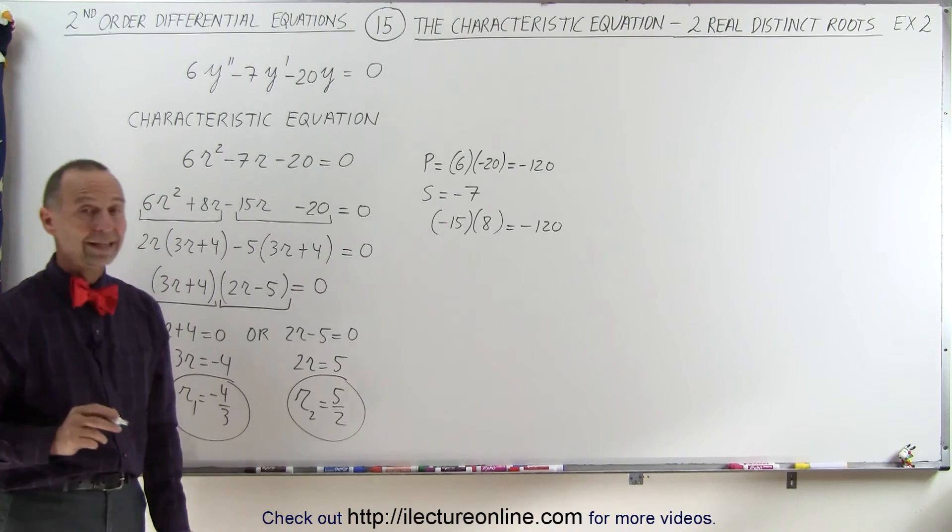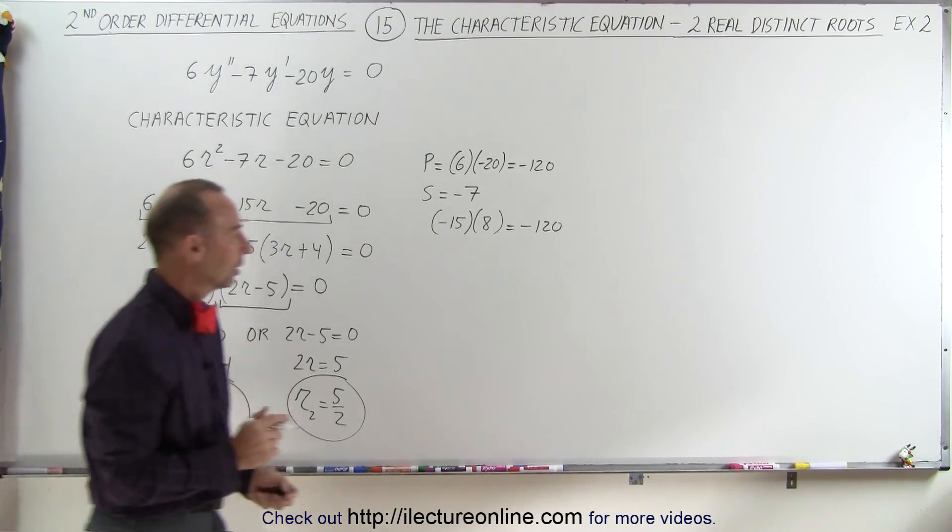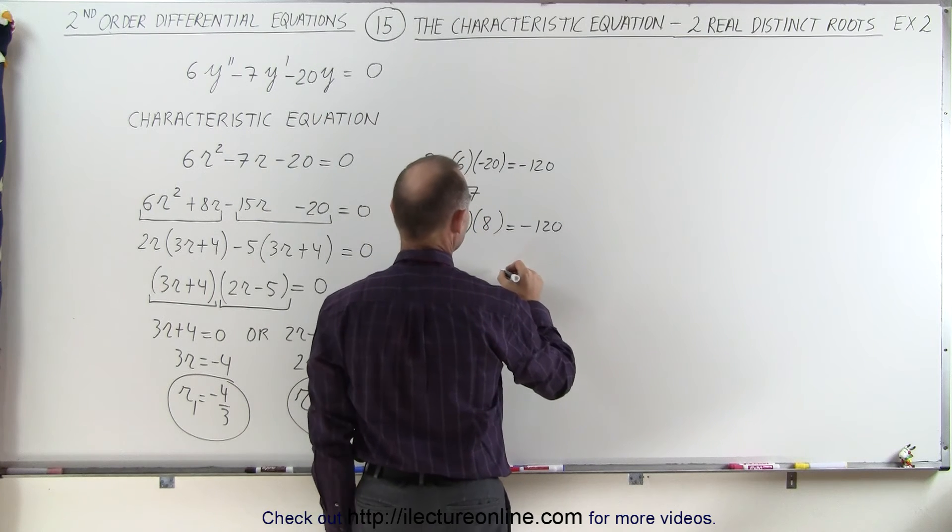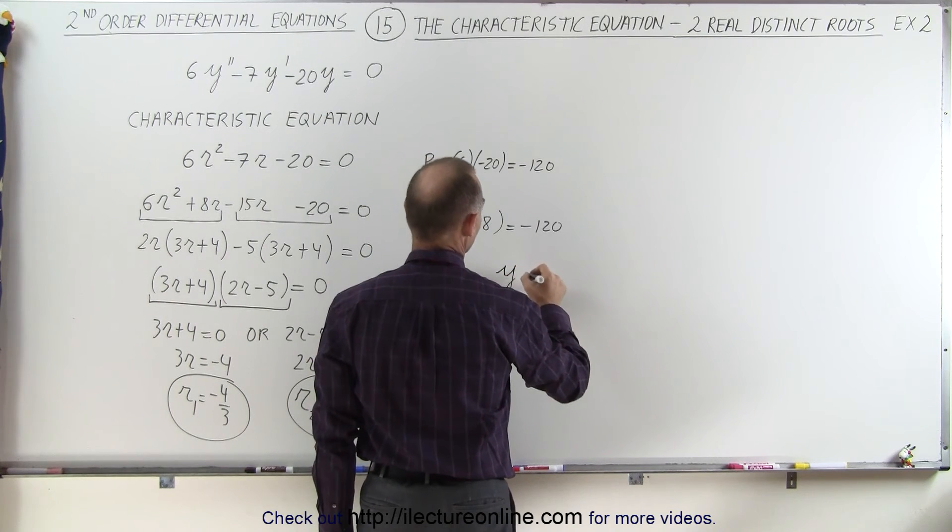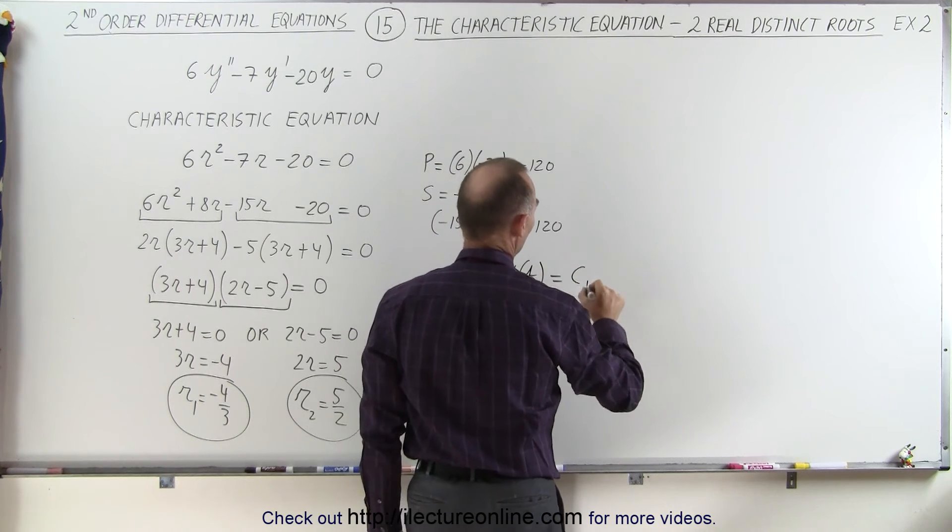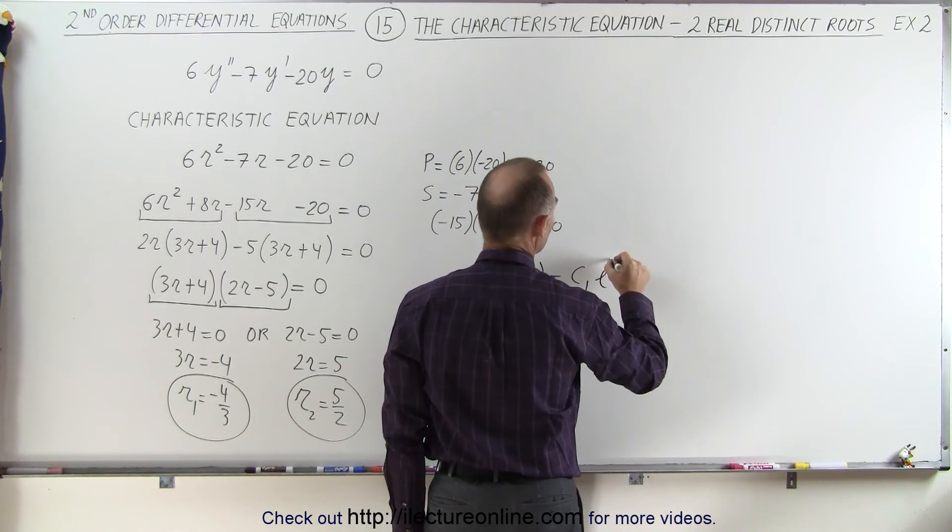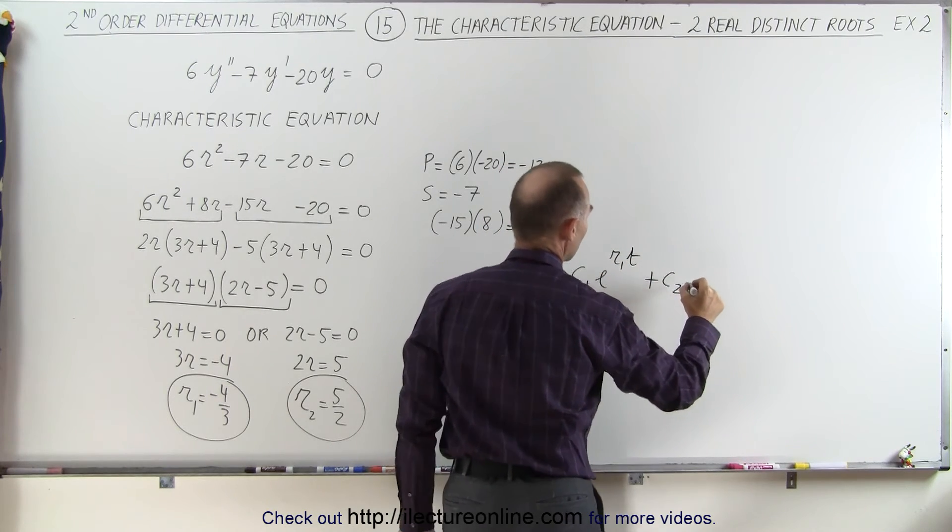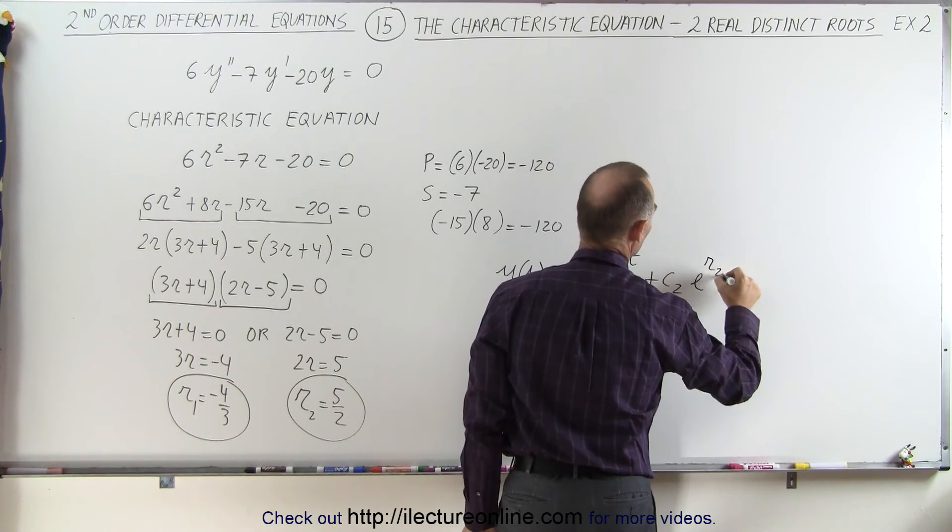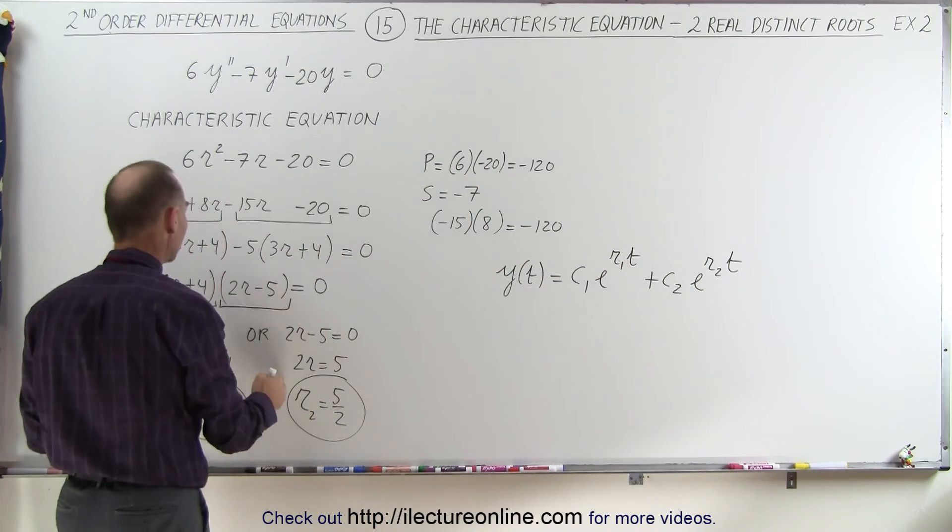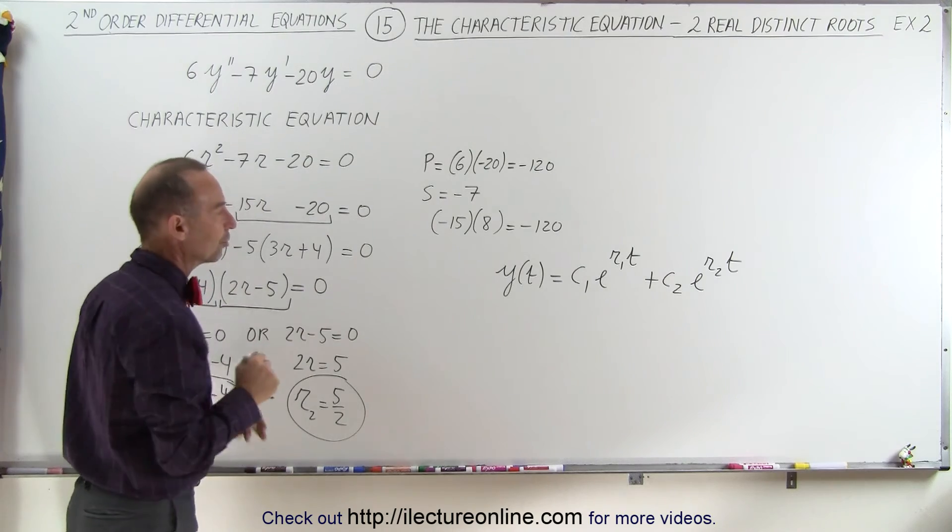Now that I have my two roots, I can get the general solution. The general solution to this differential equation is y(t) = c1·e^(r1·t) + c2·e^(r2·t), where r1 and r2 are the roots to our characteristic equation.